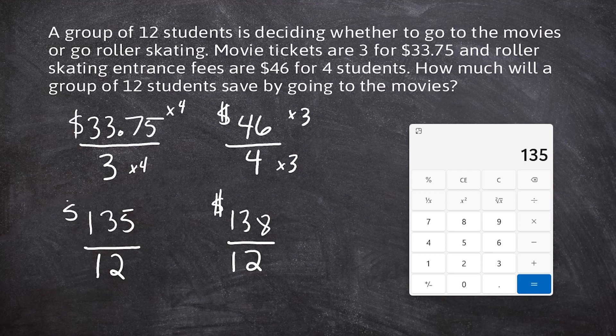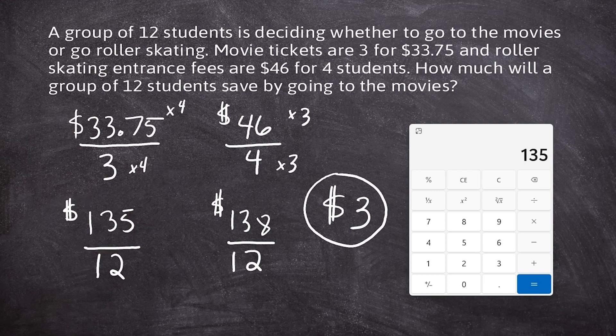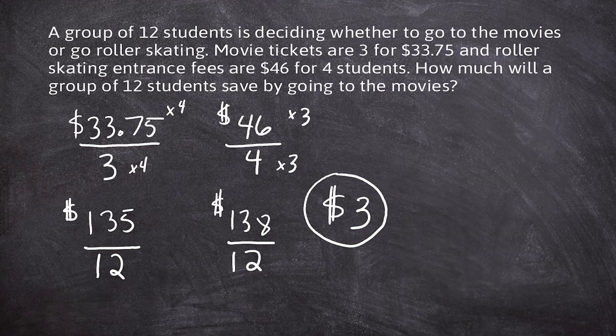We can see that the cost to do each activity for 12 students is about the same, but it is a little bit more expensive to go roller skating. So by going to the movies, the 12 students would save $3 altogether, which really isn't a huge savings. However, this would be the answer to this problem.